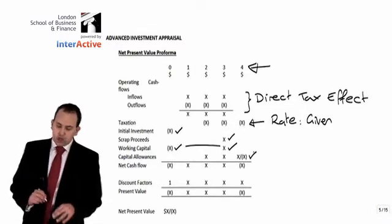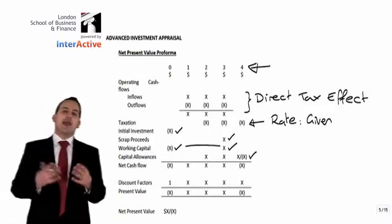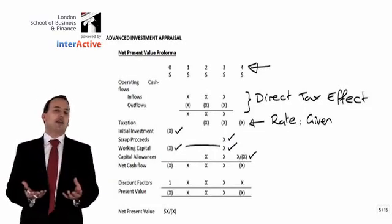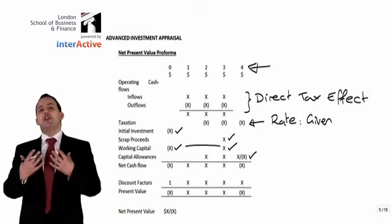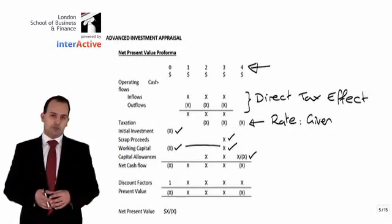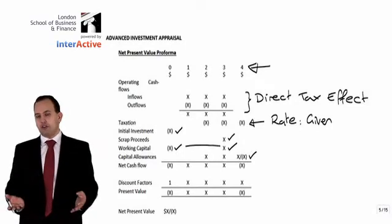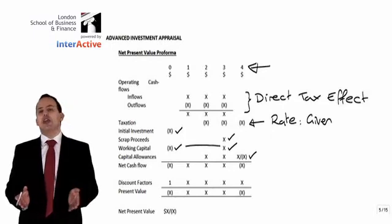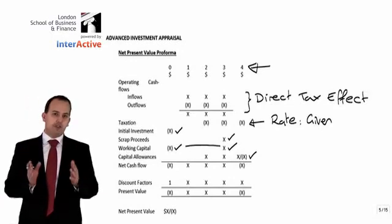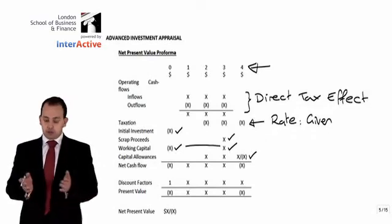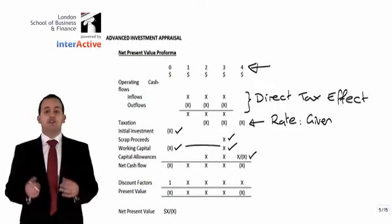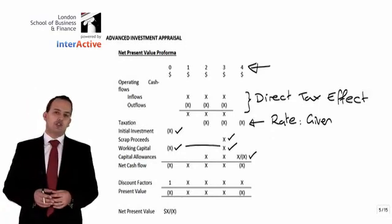We will also need to deal with our capital allowances where relevant. Capital allowances are the government's version of depreciation. We don't allow depreciation in a net present value calculation because it's not a cash flow, but instead we bring in tax allowable depreciation in the form of capital allowances, which will therefore reduce the overall tax bill. The basic rule is you will have a figure for your capital allowance — including a balancing allowance or balancing charge at the end — in every year that you're going to have a tax payment. So in this example, because our tax is in arrears, we have tax payments in years two, three, and four; you would have capital allowances in years two and three, and then a balancing allowance or balancing charge in year four.